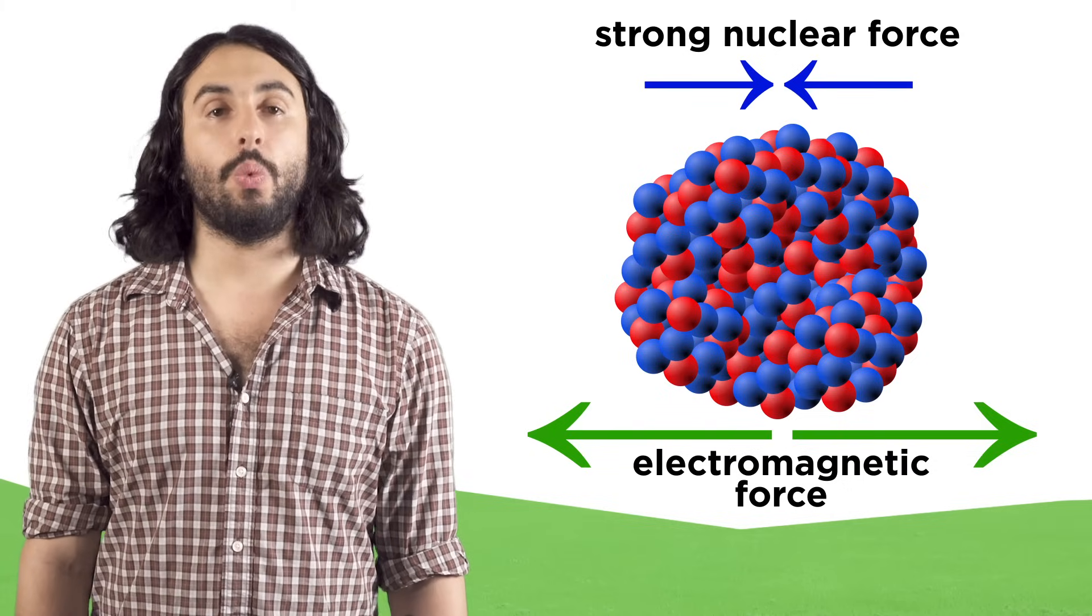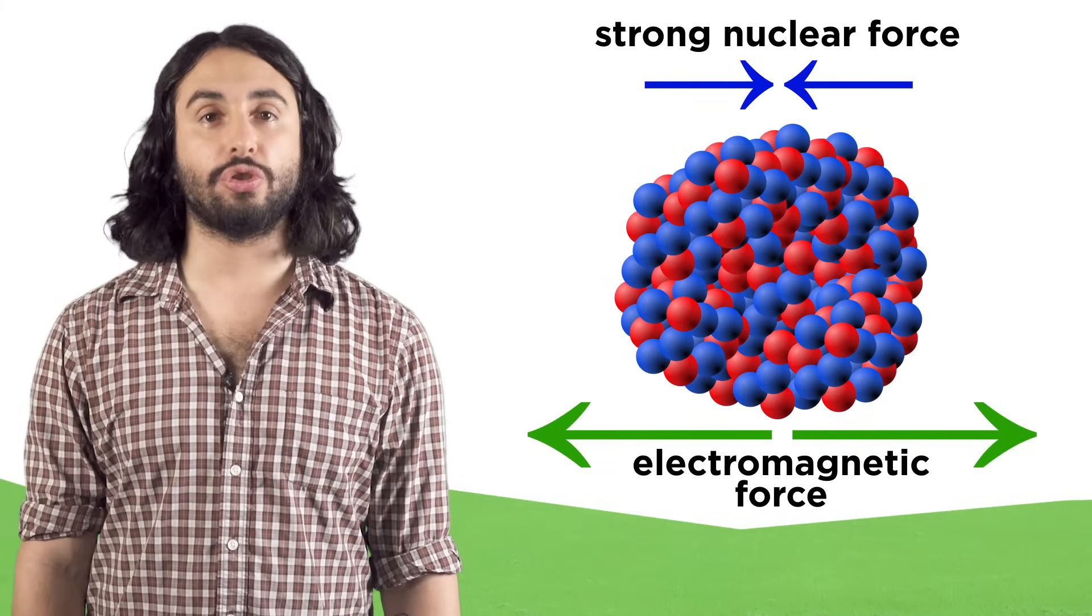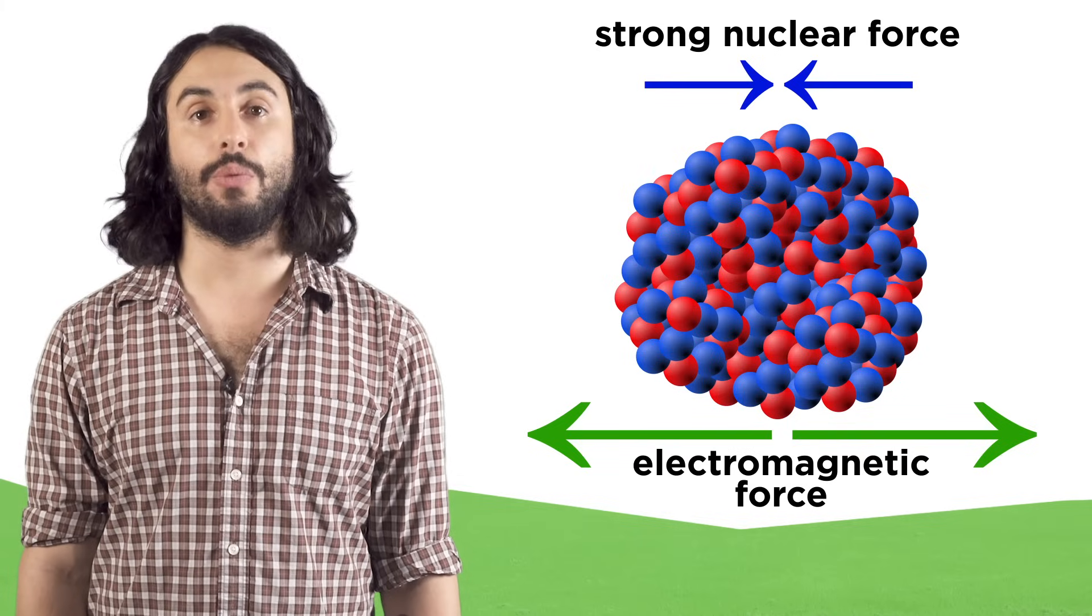Nuclei like these will often rapidly emit an alpha particle to try to get a little smaller and a little more stable.